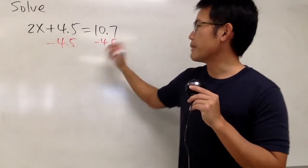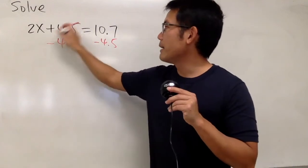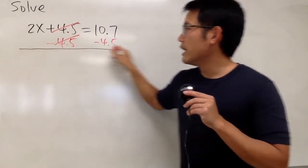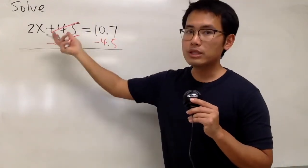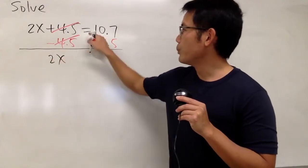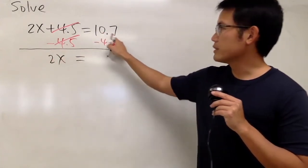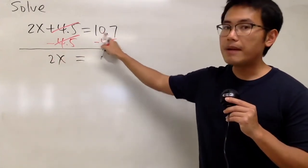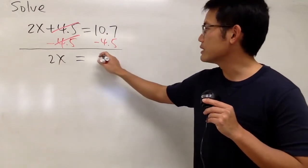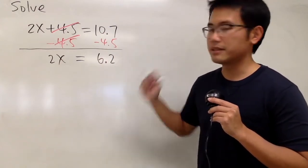And of course, you do the same thing on the other side as well — minus the same number on both sides. On the left-hand side, we just have 2x left. We'll bring down the equal sign and work this out. So, 10.7 minus 4.5, we will end up with 6.2, like this.